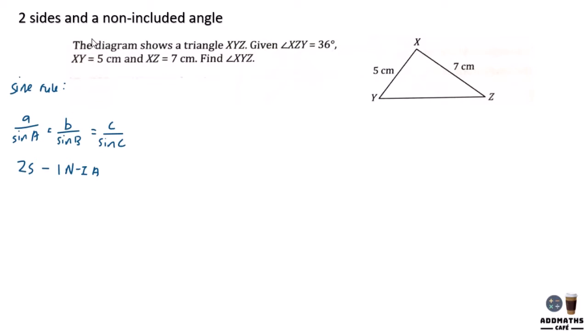So what is a non-included angle? It means that we have these two sides and the angle is XZY.